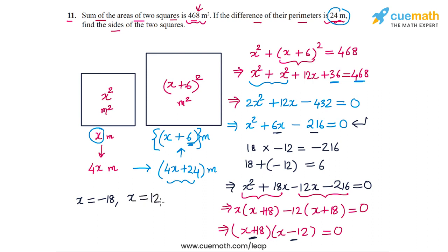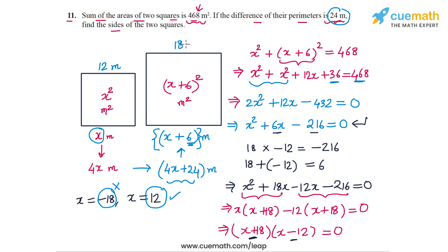The two roots are x equals minus 18 and x equals 12. Since x is a side length, it must be positive, so x equals minus 18 does not work. The valid root is x equals 12. Therefore, the side length of the smaller square is 12 meters, and the side length of the larger square is 6 meters more, which is 18 meters.